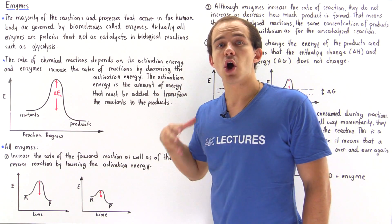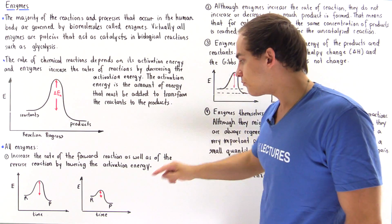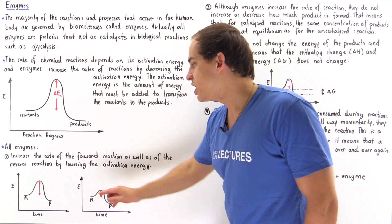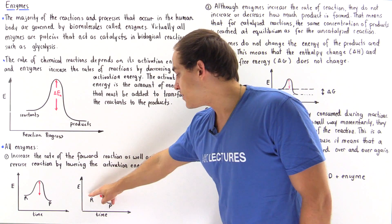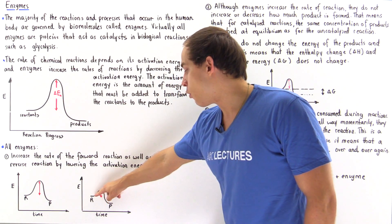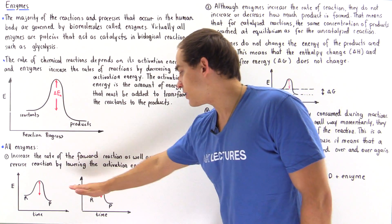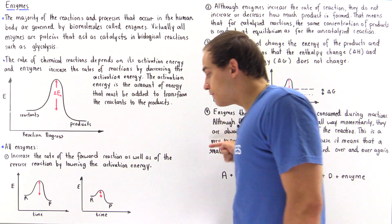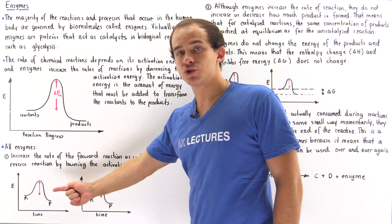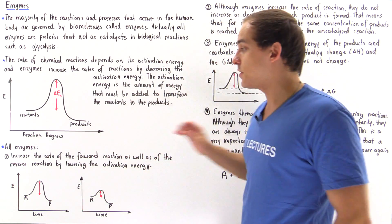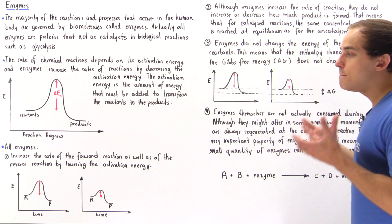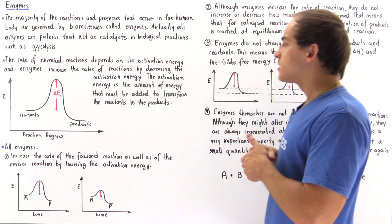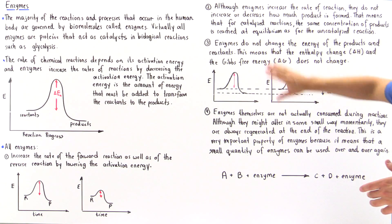Enzymes are basically catalysts. When we lower the activation energy, we not only lower the activation energy for the forward reaction, we also decrease the activation energy for the reverse reaction. That is a very important point to remember about how enzymes — our catalysts — lower the activation energy.